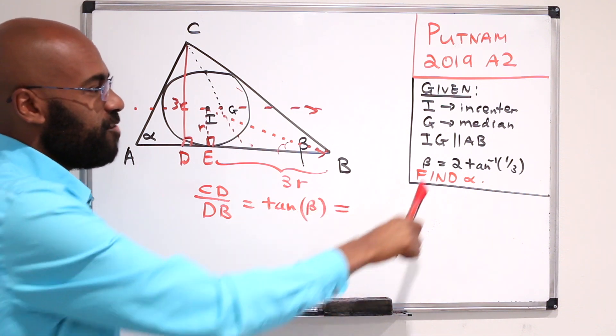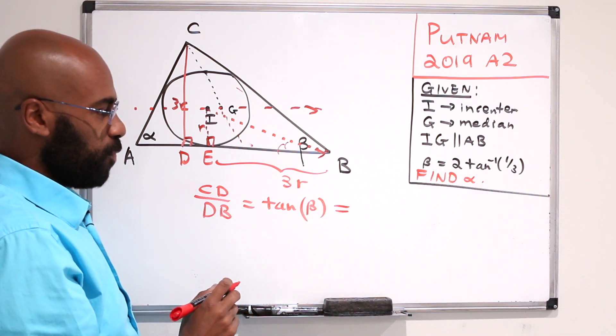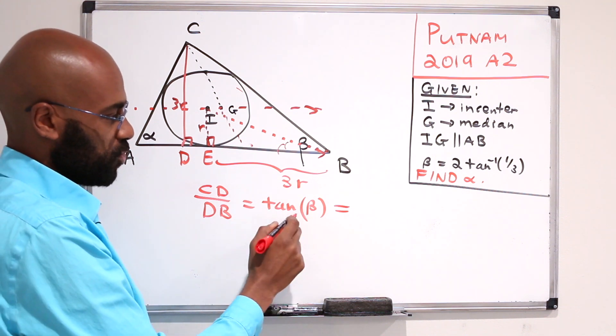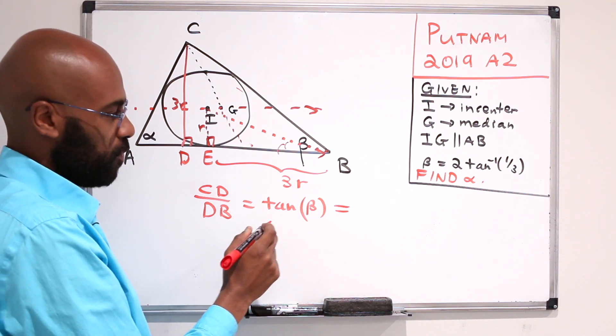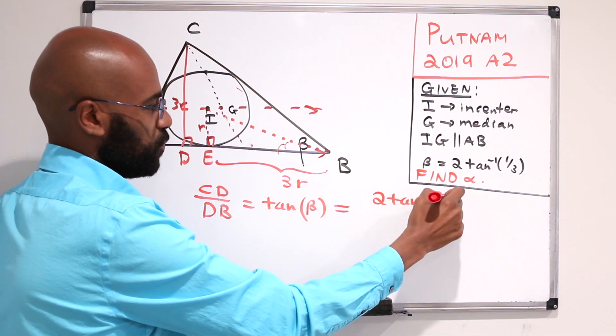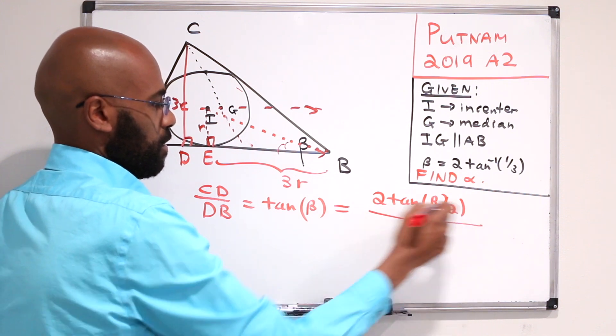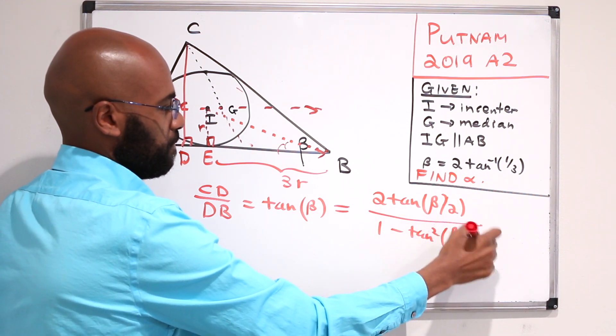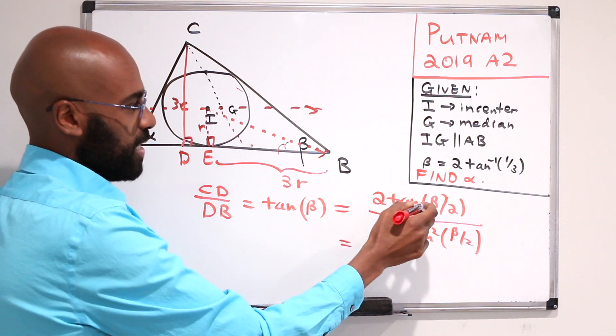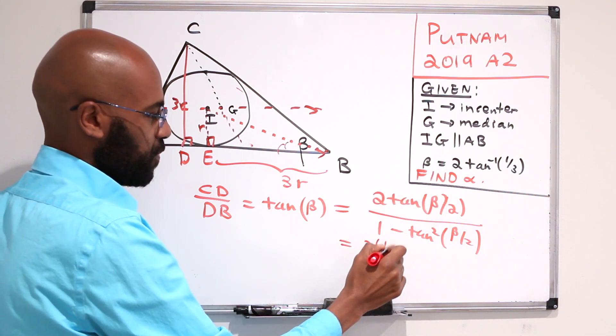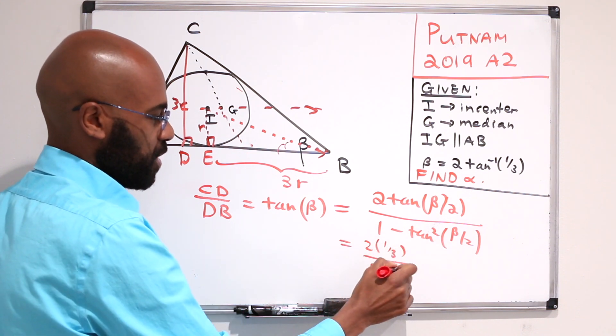Now here we have beta over 2 in terms of the inverse tangent of one-third, so we'd have to use a double angle formula to write this in terms of the tangent of beta over 2. This would be twice tangent beta over 2 over 1 minus tangent squared of beta over 2. And tangent of beta over 2 is a third, so this is twice a third divided by 1 minus a third squared, which is a ninth.